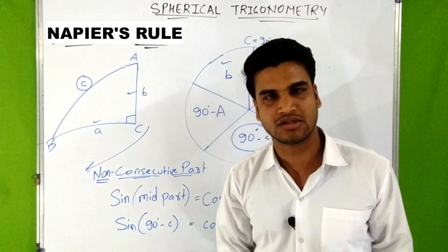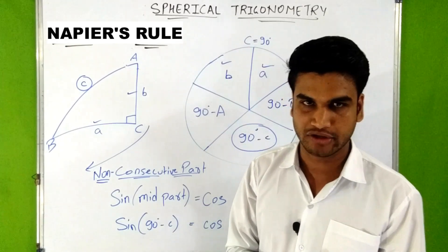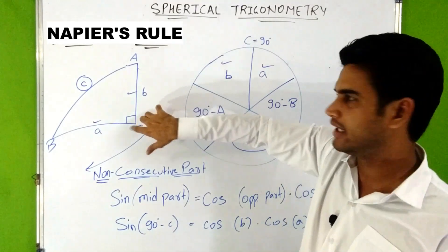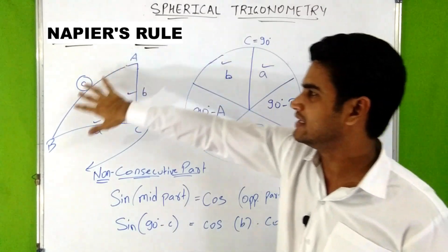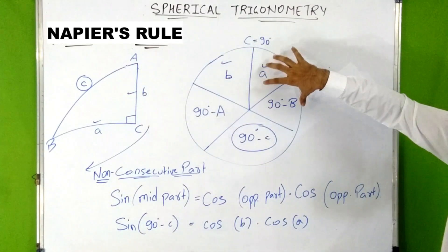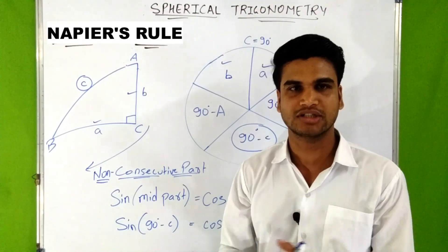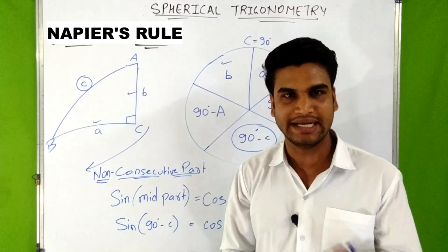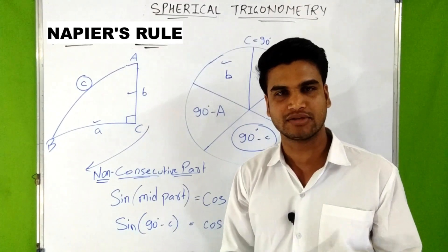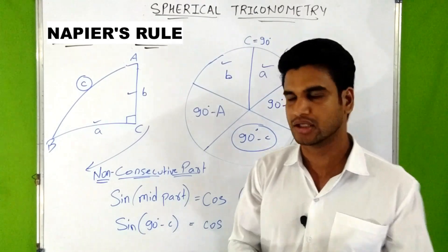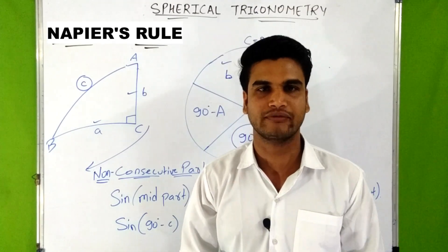To summarize Napier's Rule for a right-angled spherical triangle: apart from the 90-degree angle, two more elements are given, and we can find the three unknown elements. Draw the circle, fill in the parts, then check whether the three parts are consecutive or non-consecutive. For consecutive parts: sin(mid part) = tan(adjacent) × tan(adjacent). For non-consecutive parts: sin(mid part) = cos(opposite) × cos(opposite). Now let's solve a numerical based on Napier's Rule.